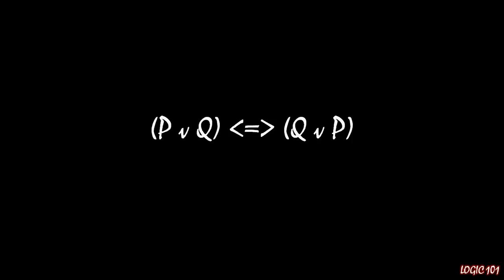And finally, if you have a biconditional — P if and only if Q — you can flip that to being Q if and only if P. That's the same thing. Just don't do that with a regular conditional; this has to be a biconditional for commutativity to work properly.